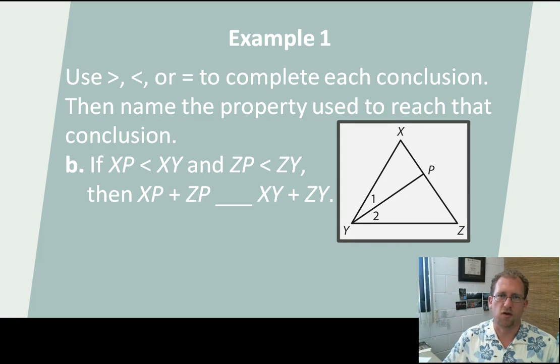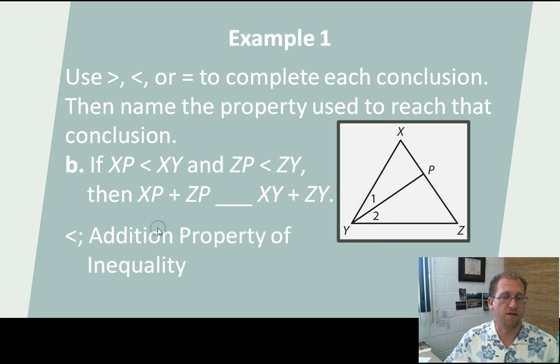Let's use the addition property of inequality here. I have a shorter segment and a longer segment, and I say that XP is shorter than XY. And then another shorter segment and a longer segment, ZP is shorter than ZY. And then I want to say, well, if I add the two shorter segments together, and I add the two larger segments together, what's the relationship of the sums? Well, shorter plus shorter is less than longer plus longer. So that's the addition property of inequality, and I should say that XP plus ZP is less than XY plus ZY, because of the addition property of inequality.